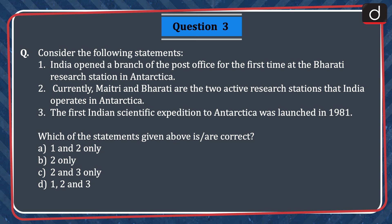Next question: consider the following statements. 1. India opened a branch of the post office for the first time at the Bharti Research Station in Antarctica. 2. Currently, Maitri and Bharti are the two active research stations that India operates in Antarctica. 3. The first Indian scientific expedition to Antarctica was launched in 1981. Which of the statements given above is or are correct? 1 and 2 only, 2 only, 2 and 3 only, or 1, 2 and 3. The correct answer is option C, 2 and 3 only.